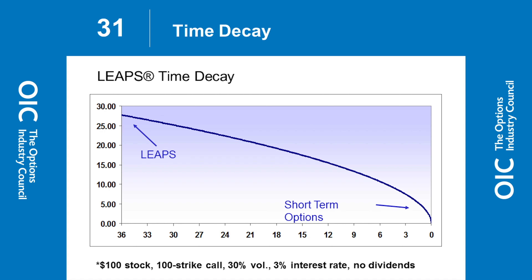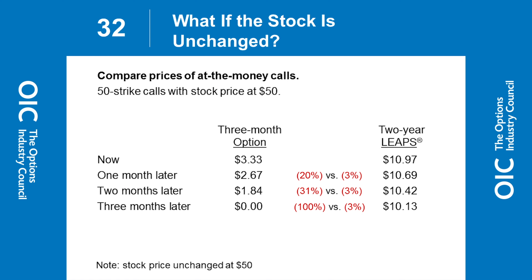Looking at three years of time: it's well over two years where the value drops from 30 to 15 – so you lose half the value. It takes about two and a third years for that contract to lose half of its premium value. Then in the last nine months, it would lose the second half. As we said, you get that accelerated time decay as you start to get close to expiration. Pretty straightforward, but let's go through a couple of slides to illustrate it.